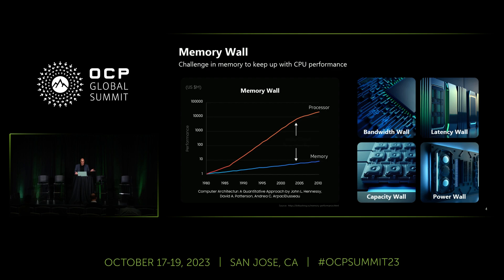We also learned about the memory wall — the bottleneck between processor resources and memory capacity. Breaking through the memory wall is a key opportunity to address emerging applications that are constrained in performance or efficiency, because data has trouble moving or there simply isn't enough memory. This leads to the bandwidth wall, the latency wall, the capacity wall, and the power wall.